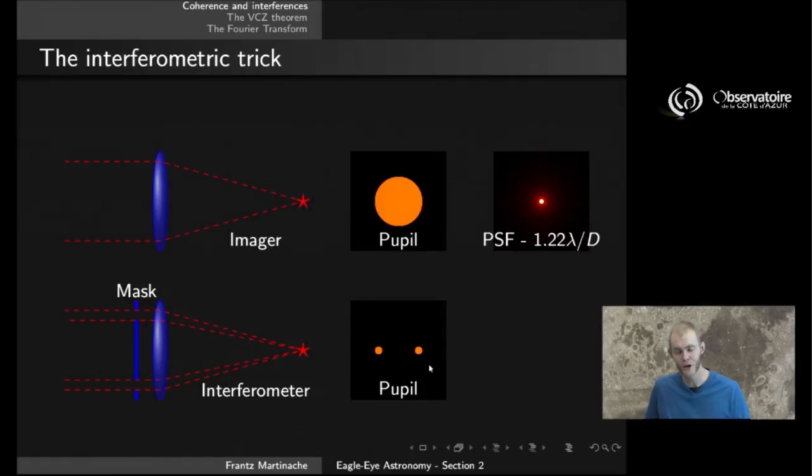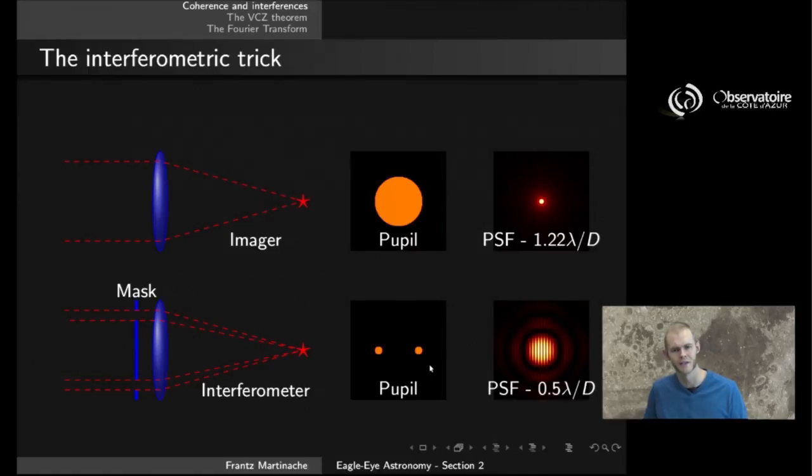The diffraction pattern produced by this system looks very interesting. Something like that. You may recognize the diffraction pattern of a single small aperture, with a first dark ring at 1.22 lambda on d, where d, in this case, is the diameter of a sub-aperture.